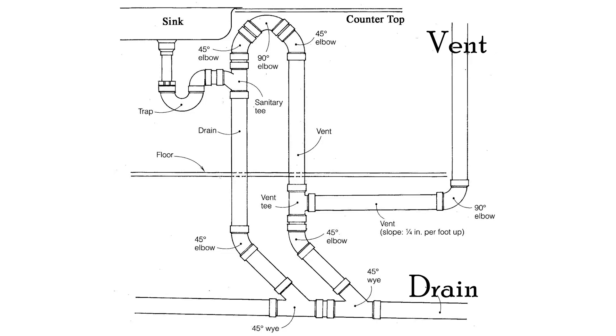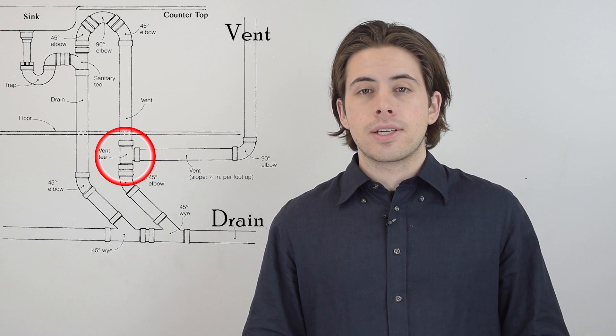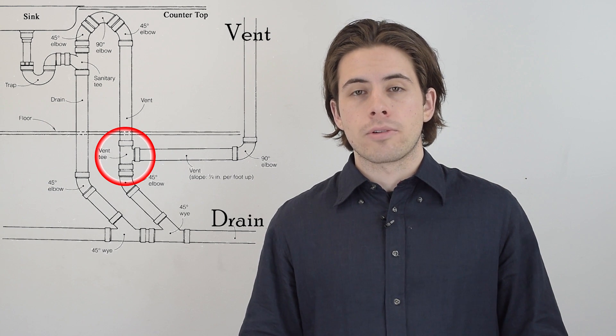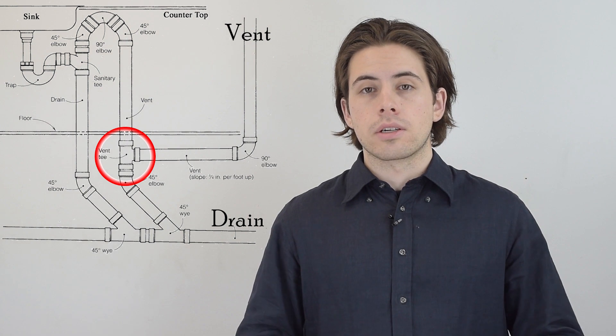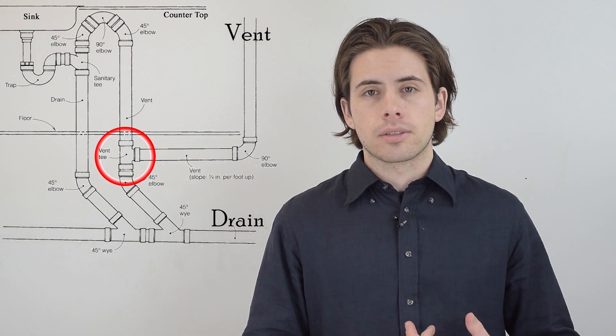I want to make a quick video to explain loop vents, which is what you need to properly vent an island in your kitchen. To first understand loop vents you have to understand the basics of DWV, which is drain and waste venting. To put it simply, anything below this red circle goes through the waste drain, and anything above this is air for venting. Having this air vent is absolutely necessary for all gravity dependent plumbing, which includes all DWV plumbing.